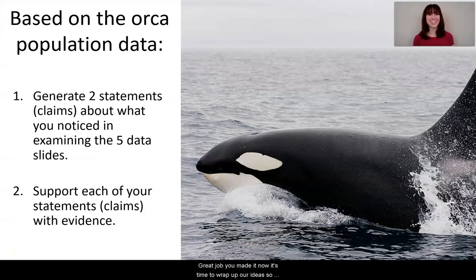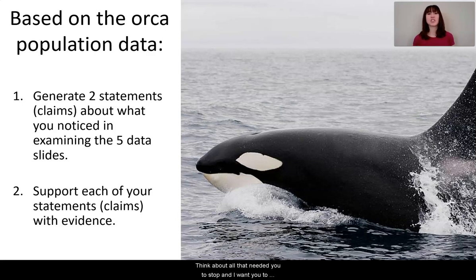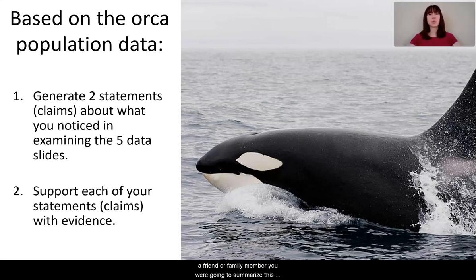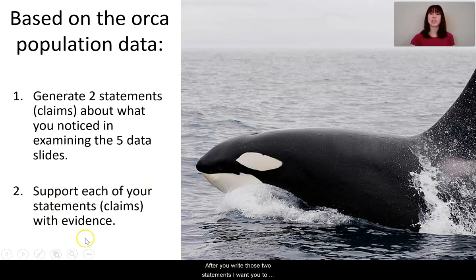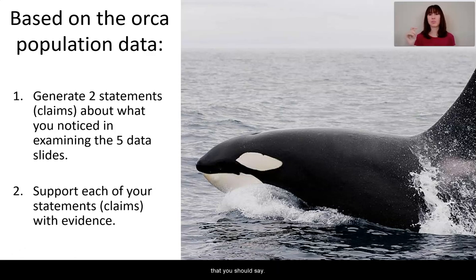Great job — you made it through the five data sets. Now it's time to wrap up our ideas. I want you to generate two statements — two claims — about what you noticed in examining those five data sets. Make a claim or statement about what is happening to orca whales. If you were going to summarize this entire lesson in two statements, what would they be? After you write those two statements, support them: go back to those data slides and give reasons — evidence — for why you know that claim is justified. Please pause the video and write those things out.